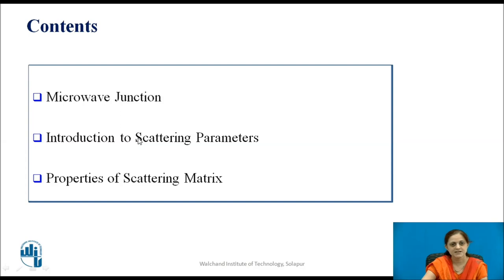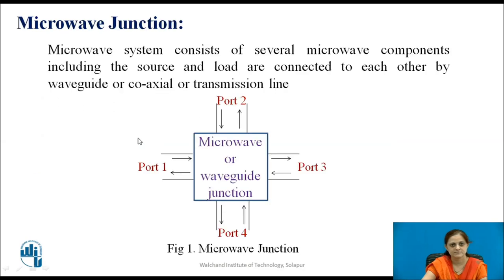These are the contents for this session. A microwave system consists of several microwave components including source and load, connected to each other by waveguide, coaxial line, or transmission line. Any microwave system having such a waveguide junction is also called a microwave junction. These are connected to different ports. Figure 1 shows a microwave junction having 4 ports: port 1, 2, 3, and 4.